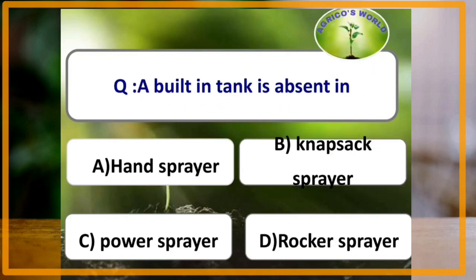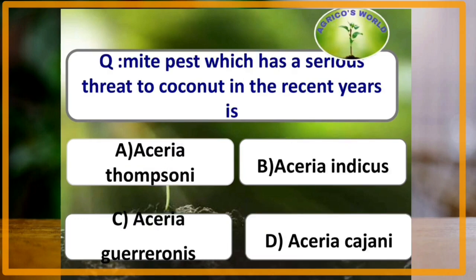A built-in tank is absent in which of the following sprayers? The answer is rocker sprayer. Mite pest which has a serious threat to coconut plantation in recent years is Aceria guerreronis.